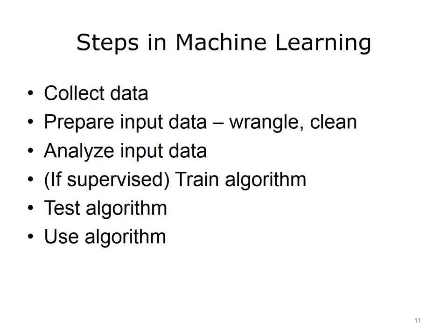What are the steps that we take in using machine learning? We begin by collecting the kind of data that we want to use for machine learning purposes. We then have to prepare the input data in a way that it can be used by machine learning algorithms. This is sometimes called data wrangling, where we transform the data into formats that can be used for machine learning. We also may need to clean the data, because the source from which it comes may have other types of data in it. Next, we analyze the input data. If we're using supervised methods, we train the algorithm, then test it with test data different from the training data, so we can determine if the algorithm is generalizable and not overfitted. Finally, we make use of the algorithm for the task for which we are planning to use it.